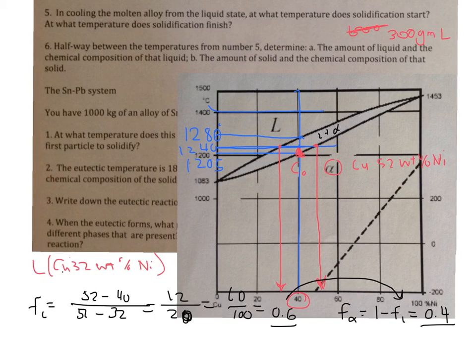And that liquid has a composition of 32 weight percent nickel. And we have 200 grams of alpha solid, which has this composition here, 52 weight percent nickel.